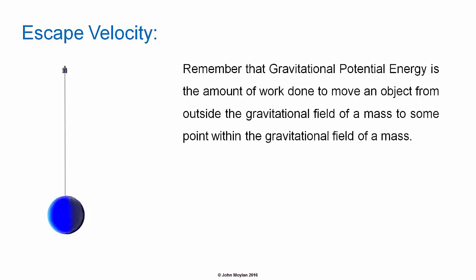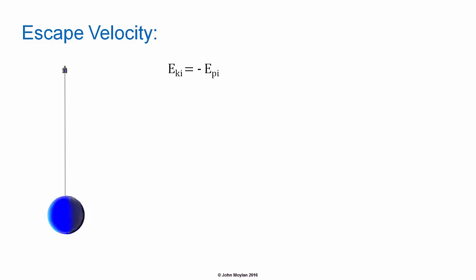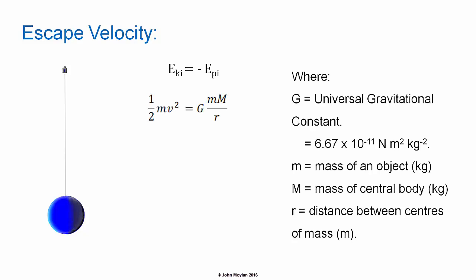Gravitational potential energy is the amount of work done to move an object from outside the gravitational field of a mass to some point within the gravitational field of a mass. Substituting in from the equations for gravitational potential energy and kinetic energy and solving for V, we get the relationship: one half mv squared is equal to capital G times little m times big M over R.